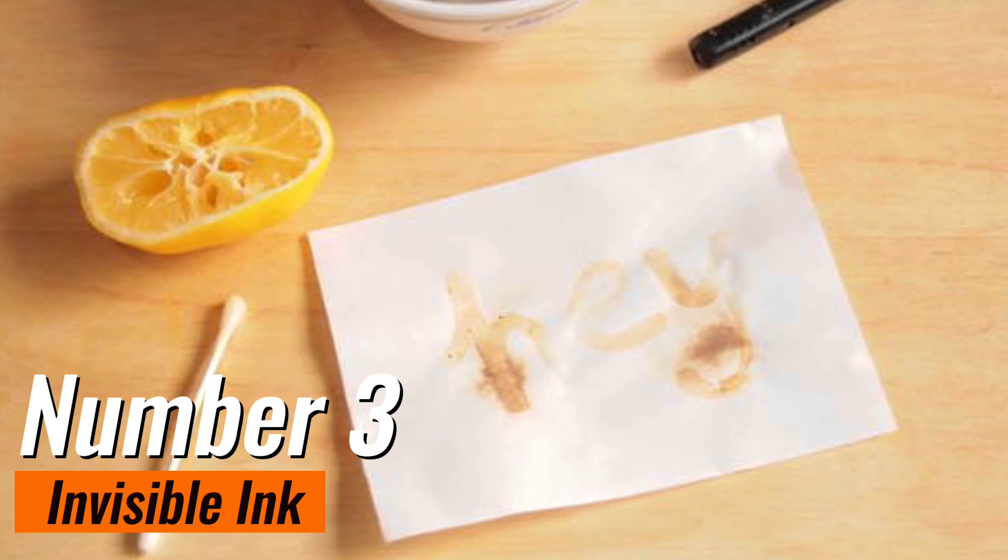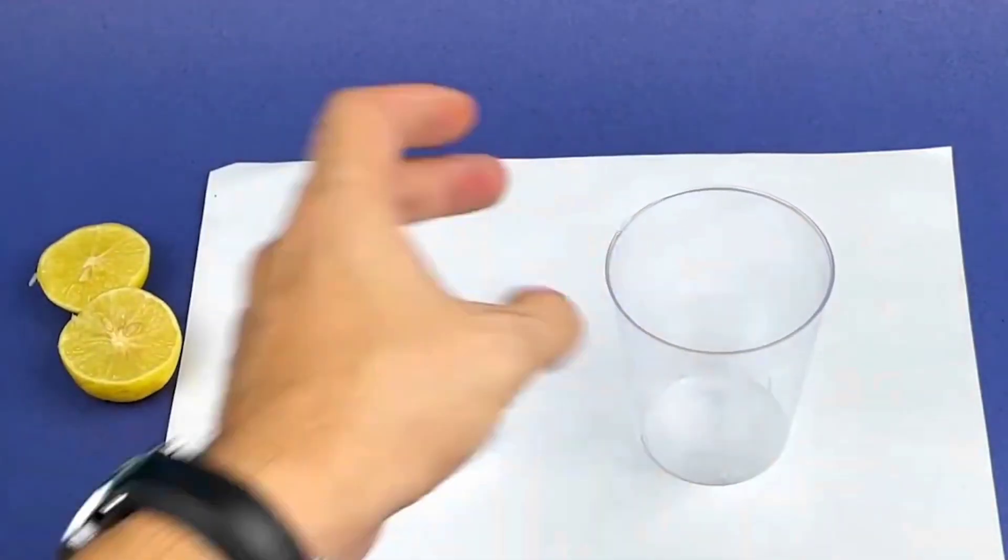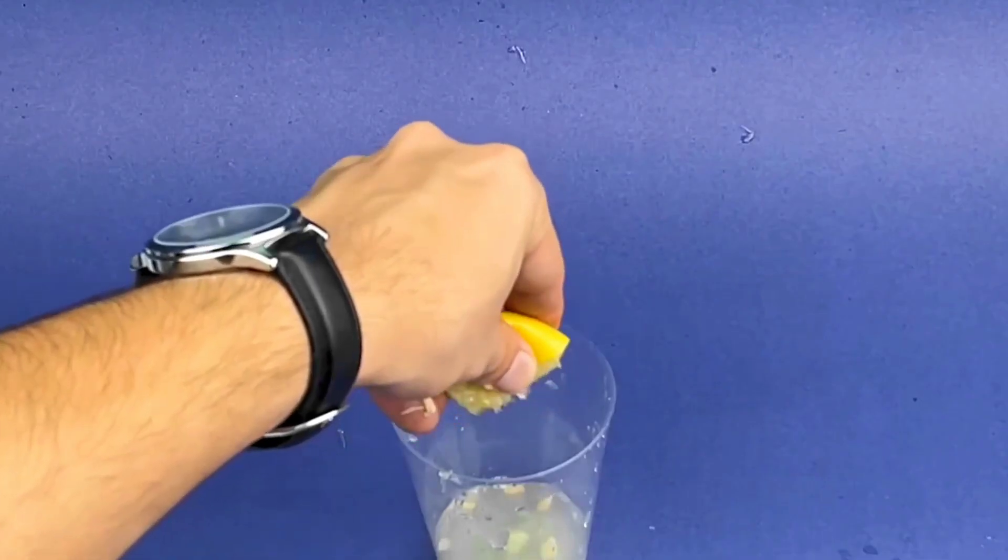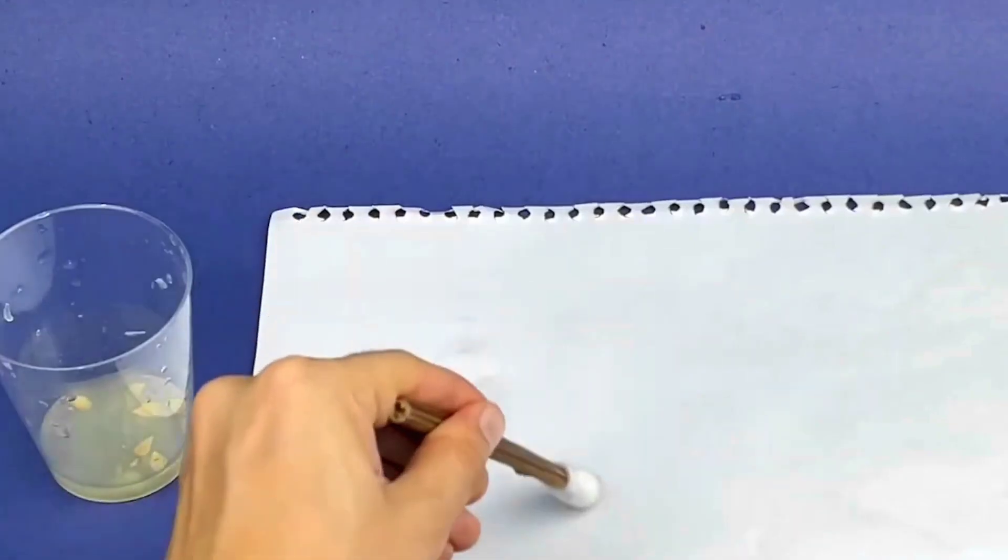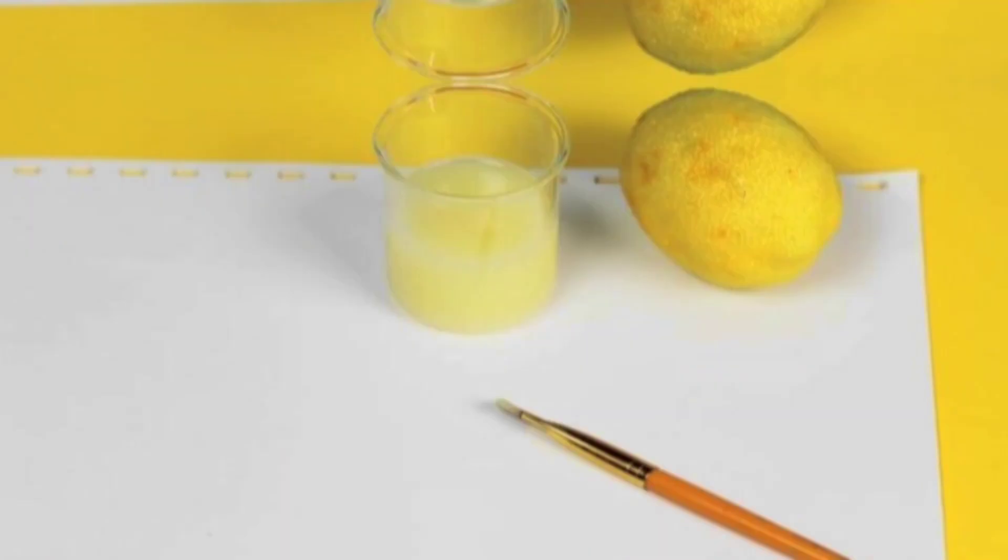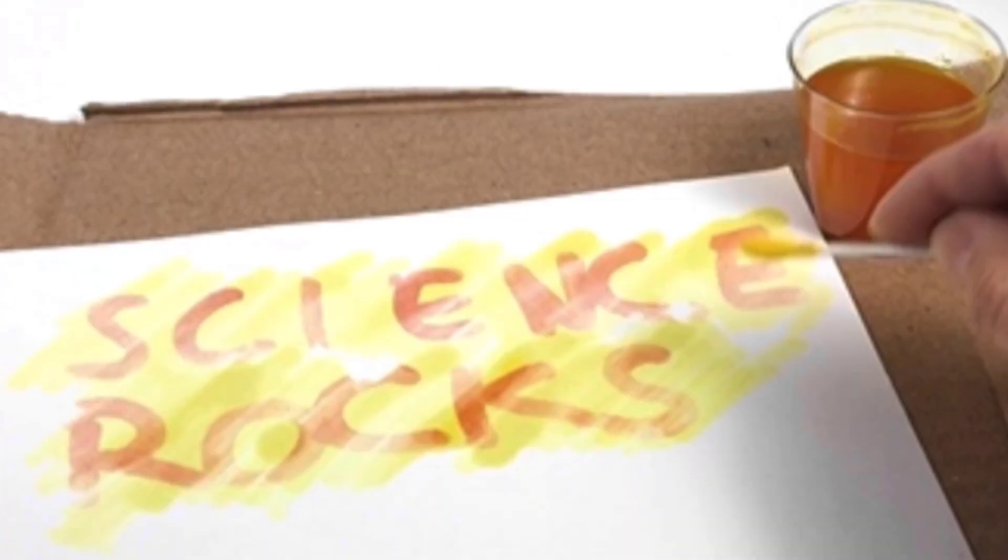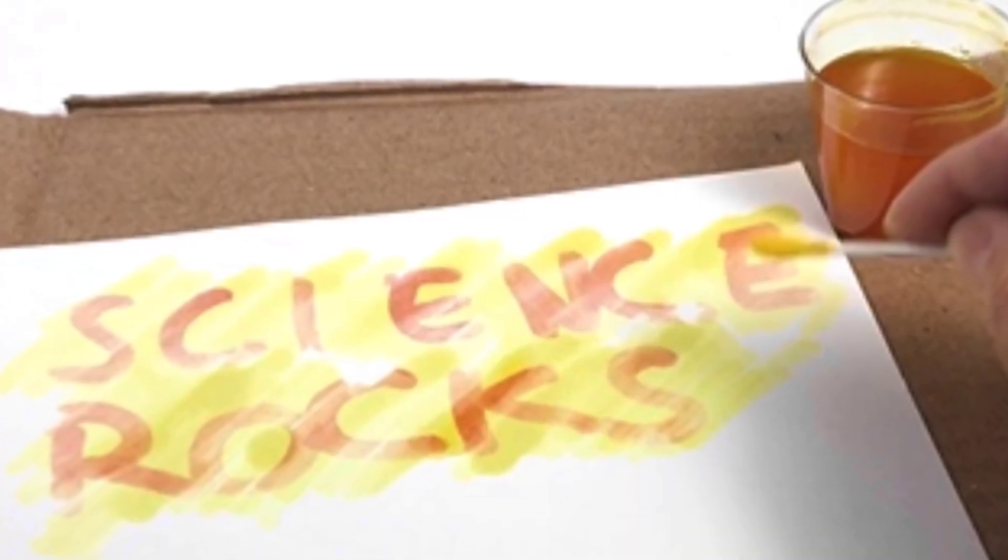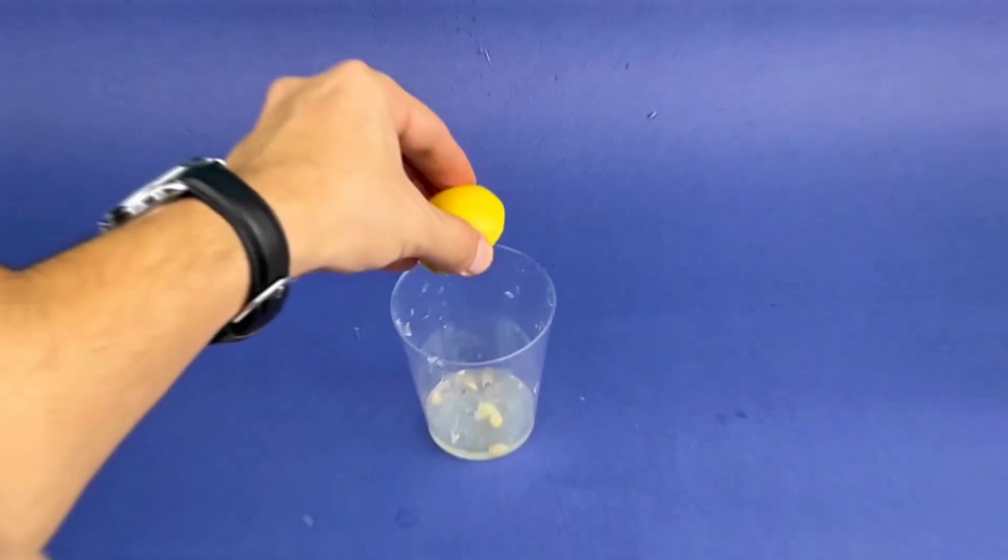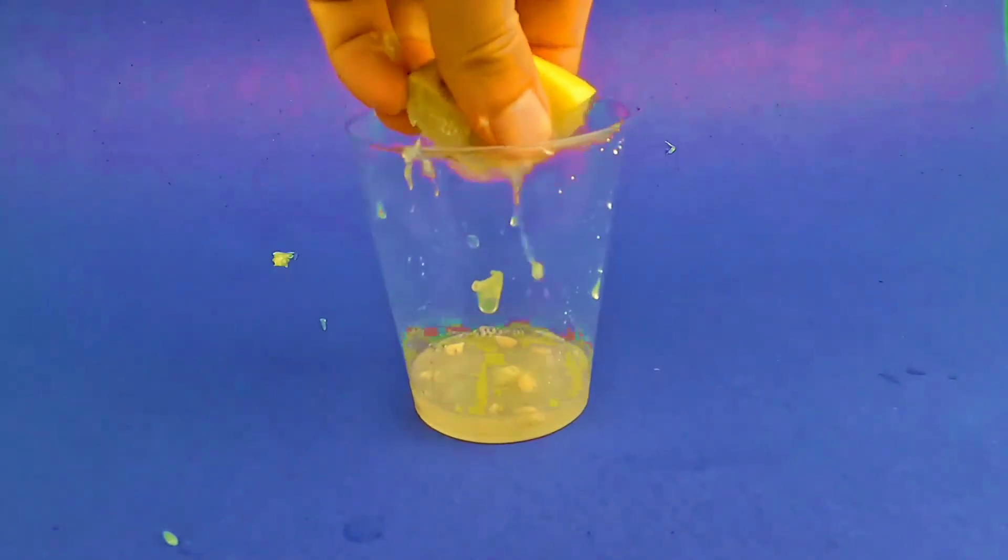Number 3. Invisible ink. The invisible ink experiment is a mysterious and exciting science activity that allows kids to create secret messages using lemon juice as invisible ink. To perform this experiment, you will need a piece of paper, a cotton swab, a small bowl of lemon juice, and a light bulb or a heat source.